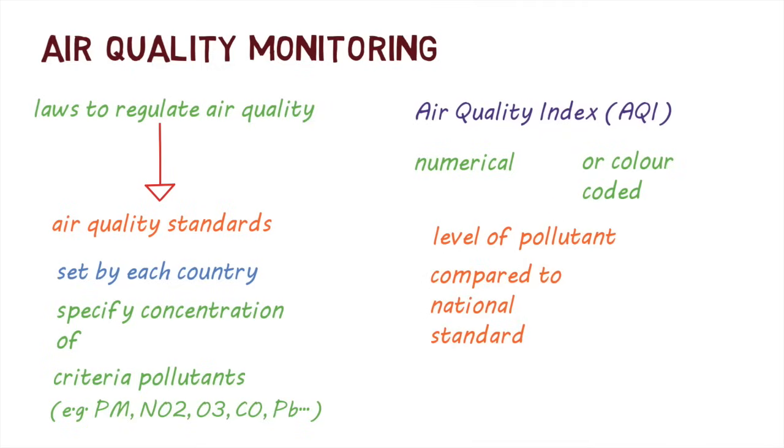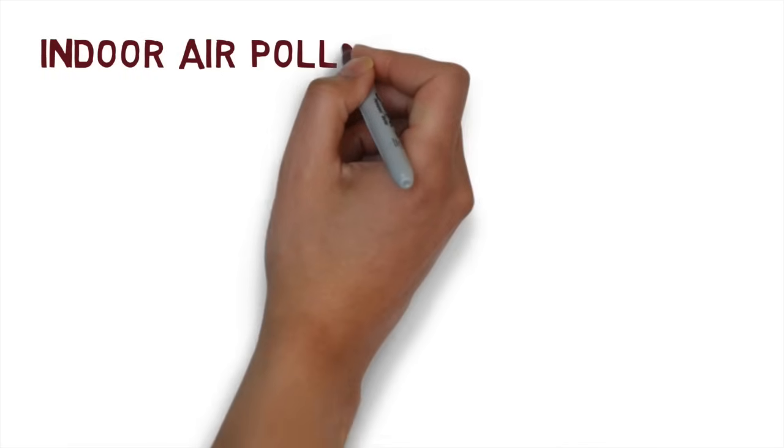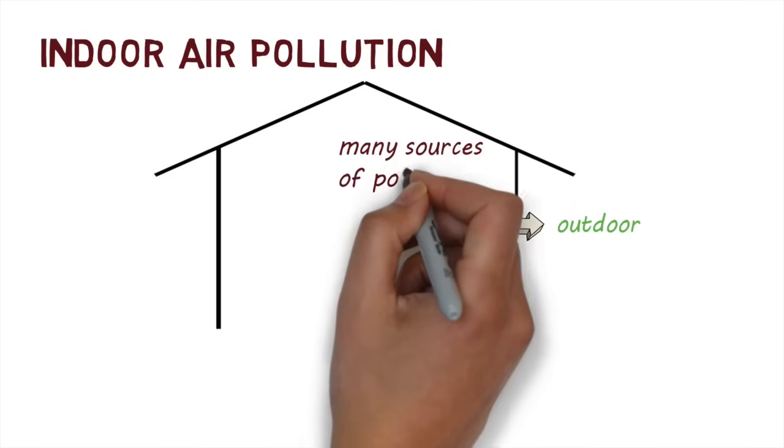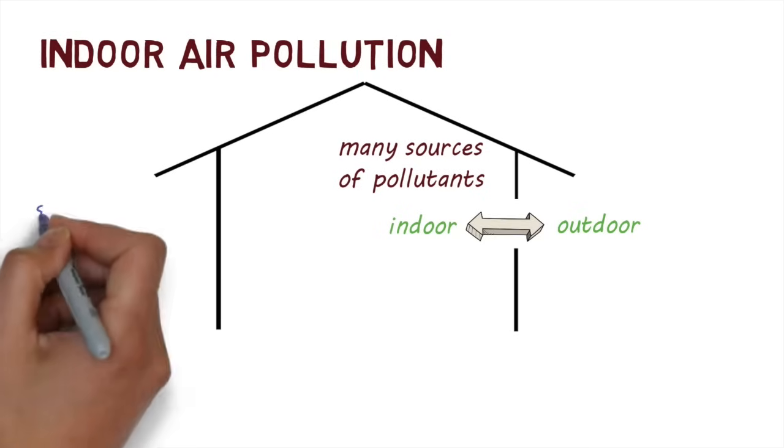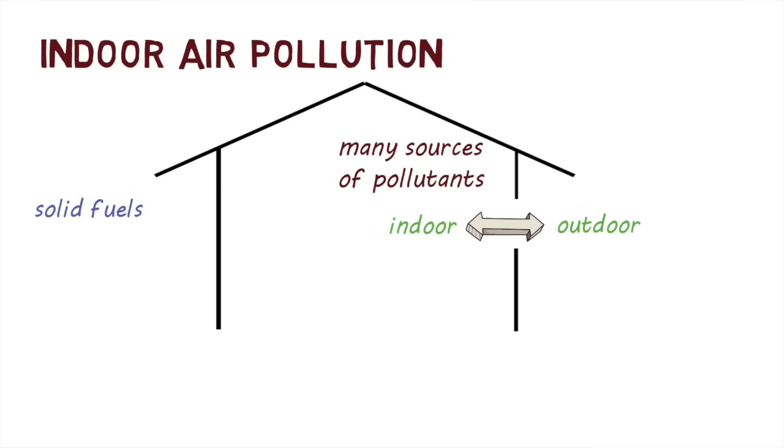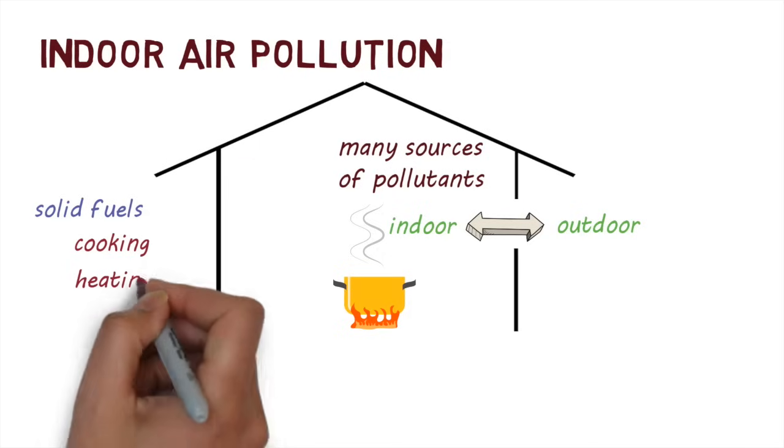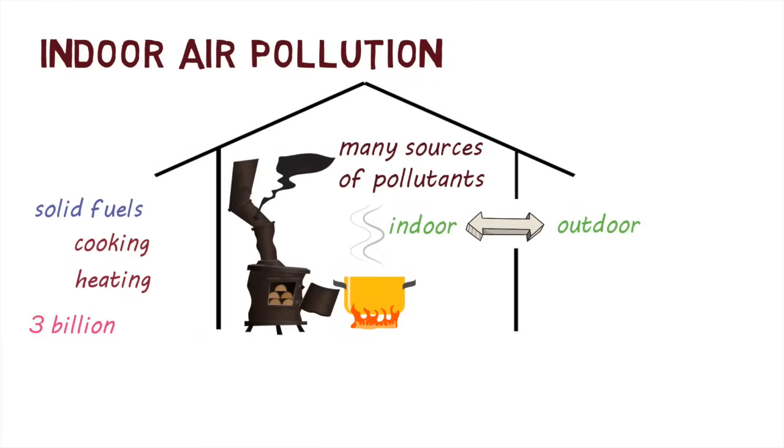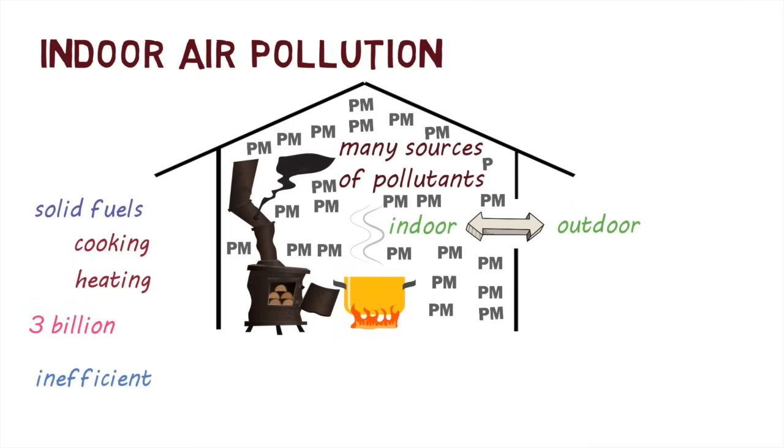Now that we've had a look at outdoor air pollution, let's have a look at indoor air pollution. Although the indoor air quality is affected by outdoor air, the quality of indoor air can be significantly different. This is because there could be many sources of indoor pollutants. The most common source of indoor pollution in the world is solid fuels, like wood, charcoal, dung, or crop waste that are used for cooking or heating. Around the world, over 3 billion people use simple stoves or open fires to cook or heat their homes. These methods are inefficient and can lead to the generation of pollutants like particulate matter, which can result in concentrations indoors of up to 100 times more than that of the outdoor air.